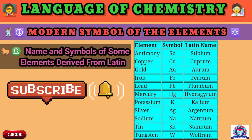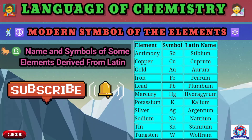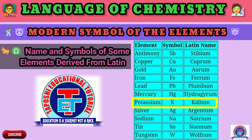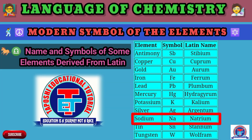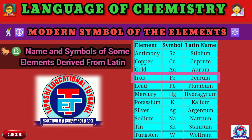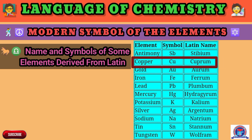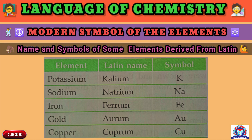Name and symbol of some elements derived from Latin: potassium — Latin name Kalium, symbol K; sodium — Latin name Natrium, symbol Na; iron — Latin name Ferrum, symbol Fe; gold — Latin name Aurum, symbol Au; copper — Latin name Cuprum, symbol Cu. I have also given a list of the first 20 elements in the periodic table with their names and symbols.